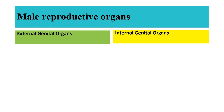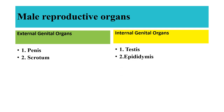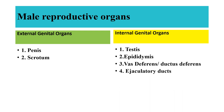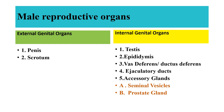The male reproductive system comprises internal and external genital organs. External genital organs include penis and scrotum, whereas internal genital organs include a pair of testes as primary sex organs. The duct system, which stores and transports sperm to the exterior, includes epididymis, vas deferens or ductus deferens, and ejaculatory ducts, whereas accessory glands include seminal vesicles, prostate gland, and bulbourethral gland or Cowper's gland.